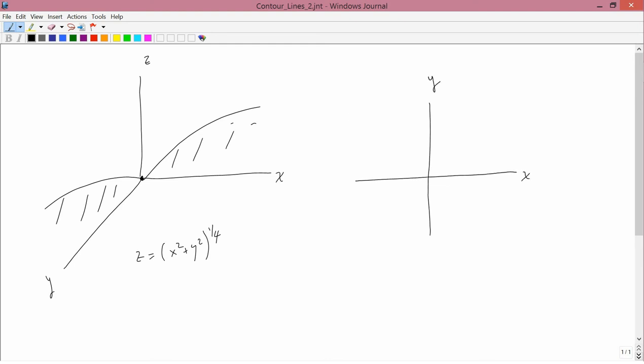So we've got the xy-plane. At the origin, that is at x equals zero, y equals zero, we're at the middle of the drain, and so we have z equals zero right here.